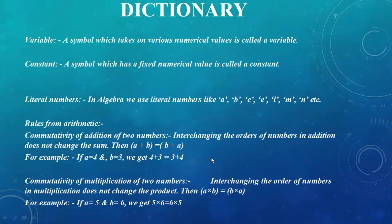If we discuss the dictionary of this chapter, we focus on the variable - a symbol which takes on various numerical values. A constant is a symbol which has a fixed numeric value. Literal numbers in algebra include a, b, c, e, l, m, and x. Rules from arithmetic include the commutative property of addition of numbers, interchanging the order of numbers in addition does not change the sum, and commutative property of multiplication.